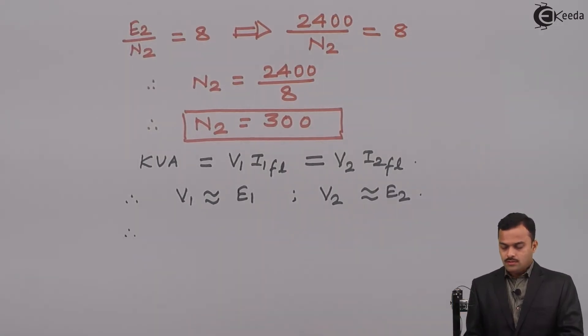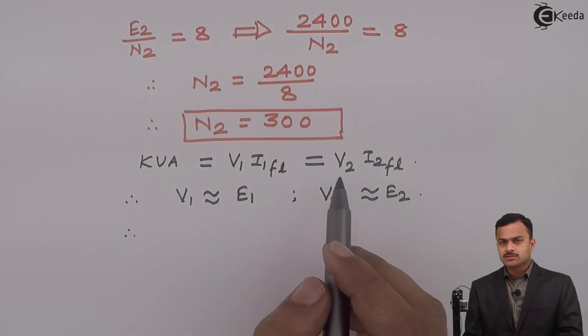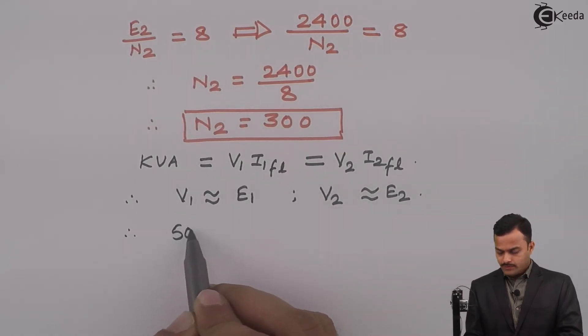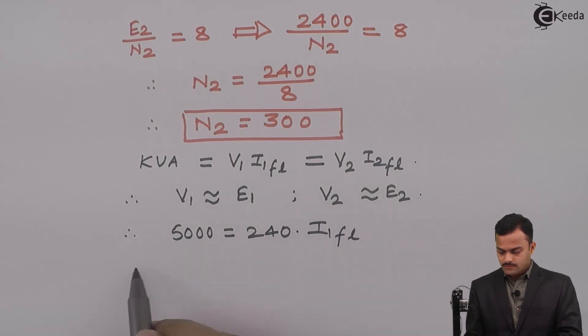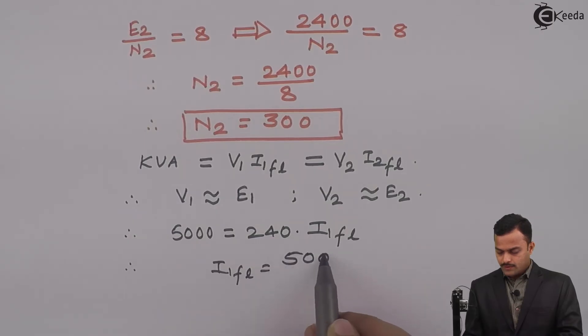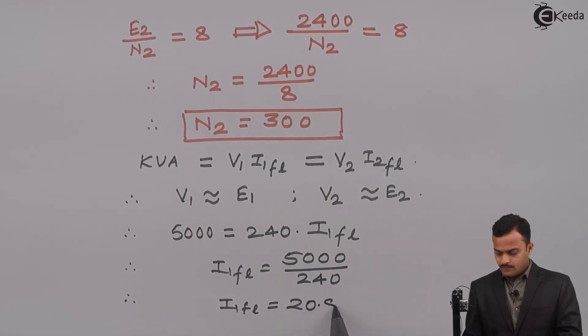So, if I solve I will consider this equation first: KVA equal to E1 into I1 FL and if I substitute the given values I will get 5000 equal to 240 multiplied by I1 FL. So, I1 FL equal to 5000 divided by 240. Solution to this equation is I1 is equal to 20.8333 ampere.